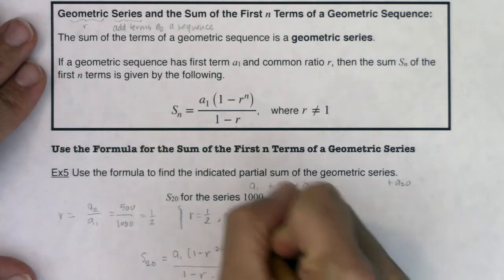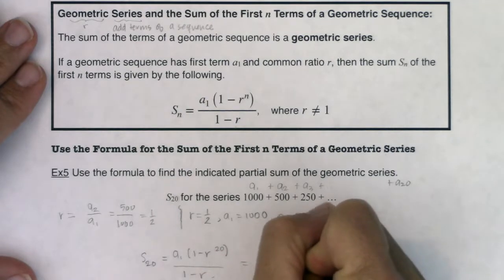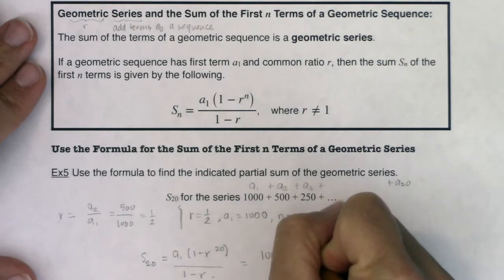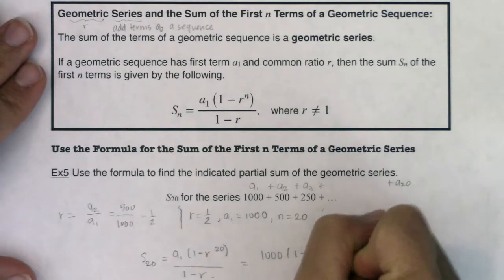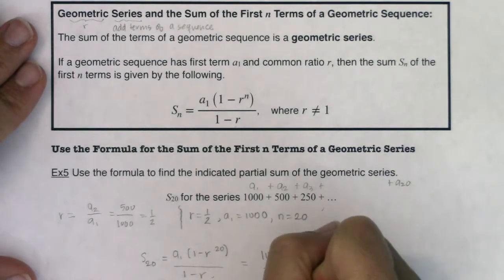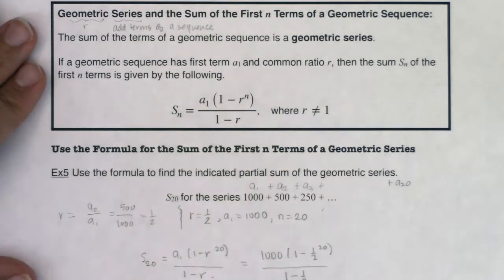So let's see what we have. We have a sub 1, which was 1,000, times 1 minus 1 half raised to the 20th power all over 1 minus 1 half.